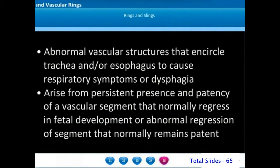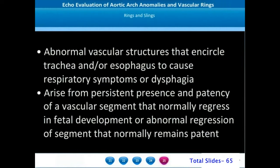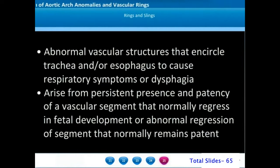After this discussion on aortic arch interruption, we move on to the various vascular rings and slings. These refer to abnormal vascular structures that might encircle the trachea and may involve the esophagus, causing respiratory symptoms of stridor and dysphagia.